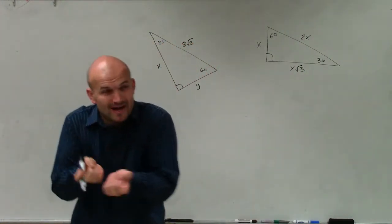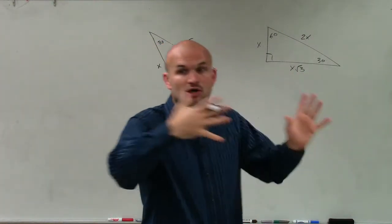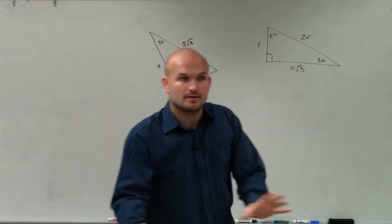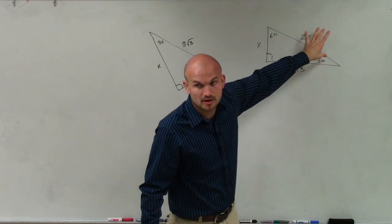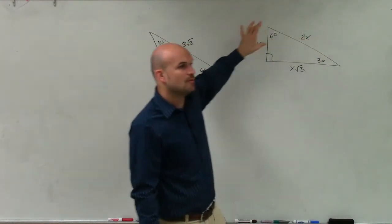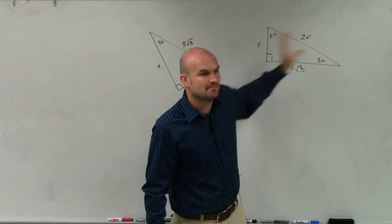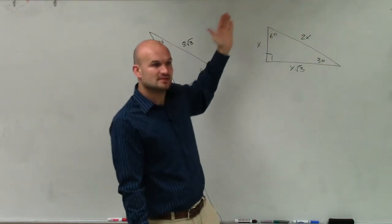So if I'm provided that short leg to find the hypotenuse, I multiply by 2. If I'm provided this to find this, I multiply by 2. But what about if I was provided this and I wanted to find that, what would I have to do? Instead of multiplying by 2, I'd have to divide by 2.